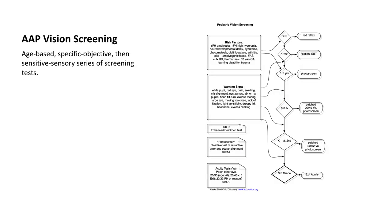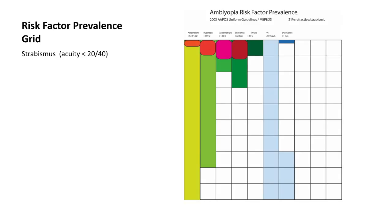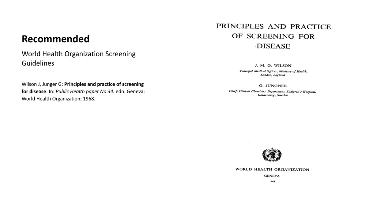Another important tool in validation is the receiver-operator characteristic curve, and we will show you how you can generate your own ROC curve. We also have a graphic understanding of the American Academy of Pediatric Vision Screening Guidelines, which is an age-based presentation of different screening modalities over a child's first decade. I also show you a risk factor prevalence grid that shows you the amblyopia risk factors and how many you might expect from community screening. Some references include the 1968 World Health Organization guidelines for health screening.